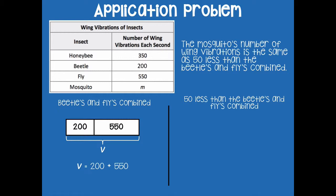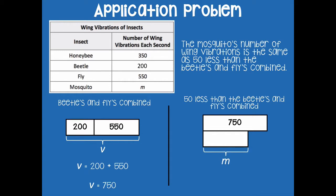200 plus 550 is 750. That's just the combined vibrations — we're not done yet. Now we move to the second step: 50 less than the beetle and fly combined. We just figured out they combined to 750, so in our tape diagram the total is 750, and that small part is 50 — the 'less' part. So we subtract: 750 minus 50 to find the value of the mosquito. Go ahead and do that on your dry erase board and click play when you're ready to go over it together.